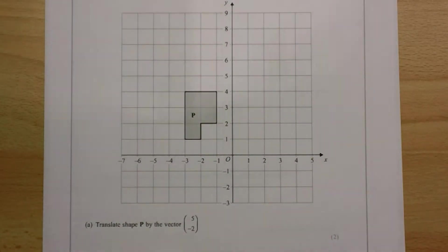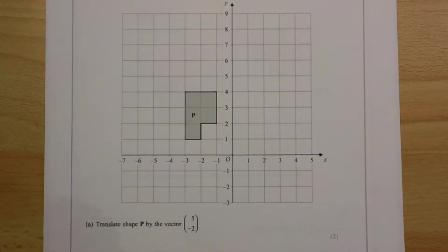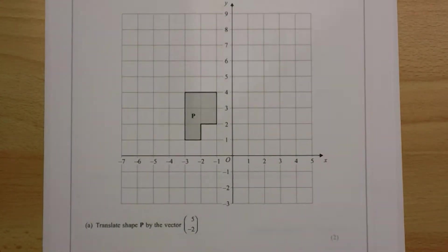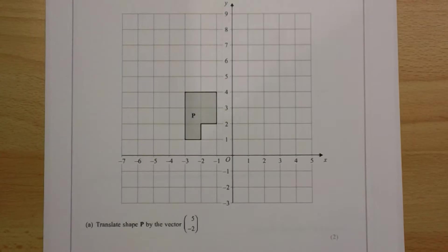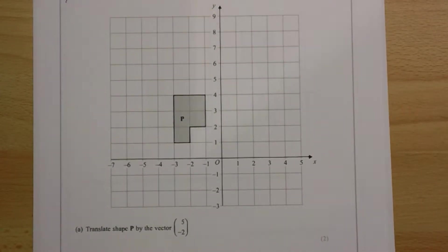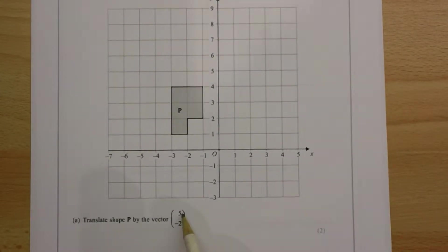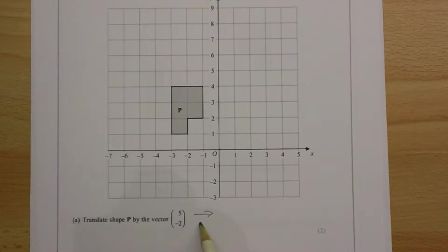Translation is just moving a shape in horizontal and vertical directions around the grid. The shape doesn't get bigger, it doesn't flip over, it doesn't turn round, it stays the same way up on the page. The vector tells you that this shape has to move five to the right and two units down. If that number had been negative, it would have been a left shift. If that number had been positive, it would be an up shift.